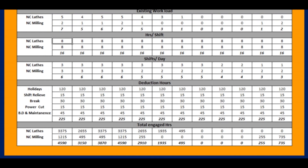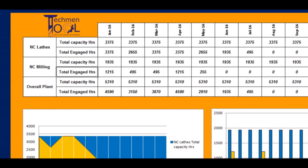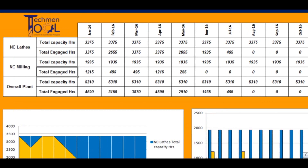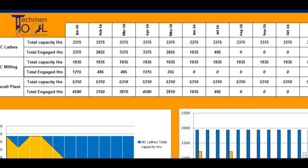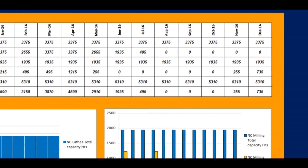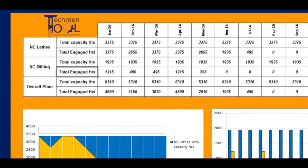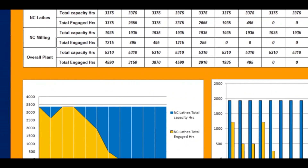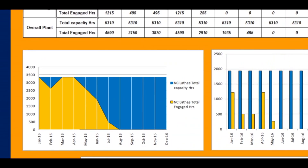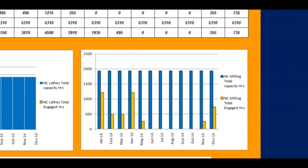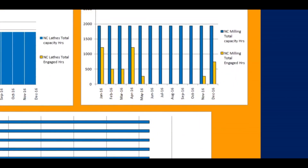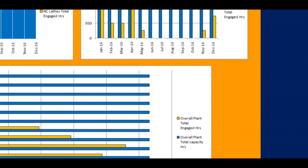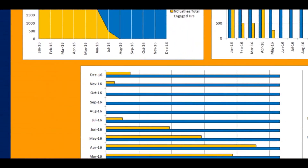Total engaged hours are calculated based on consideration of total assigned machine hours per shift, total assigned machines run, total shifts per day, and deduction of unproductive hours. So if we deduct total engaged hours from total capacity, the capacity available for requirements will be obtained.